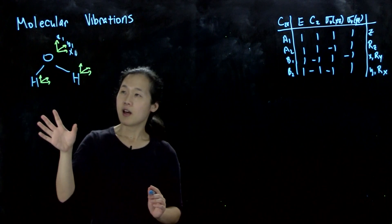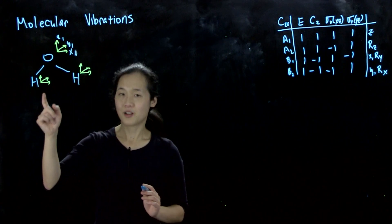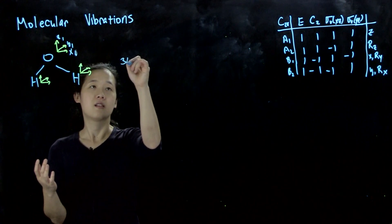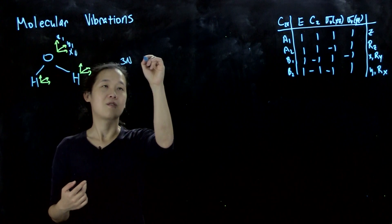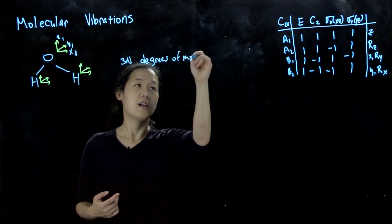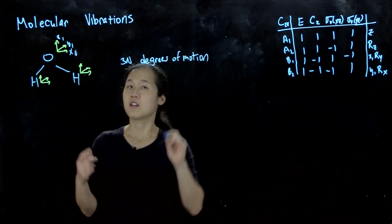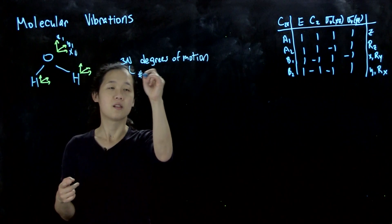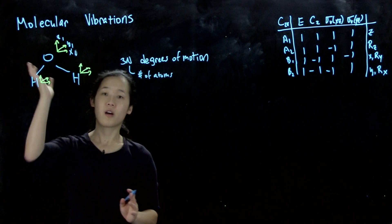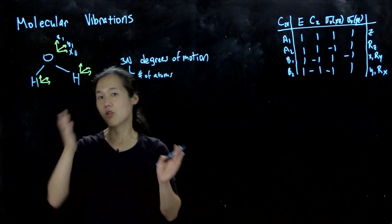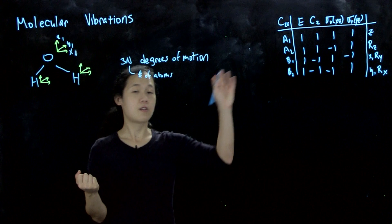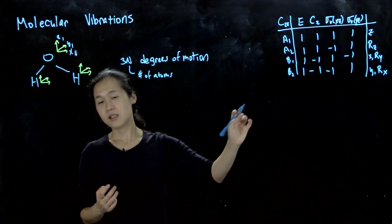When you have a polyatomic molecule — we have three atoms here — you're always going to have 3N degrees of motion, where N is the number of atoms. So if you had four atoms, you'd have 12, and you end up building 12×12 or 15×15 huge matrices. That's why using irreducible representations is going to be a lot easier.